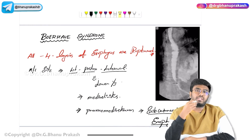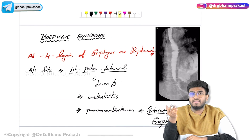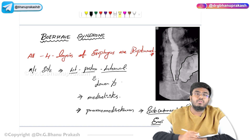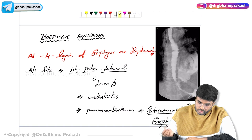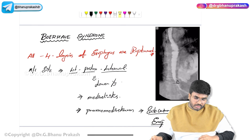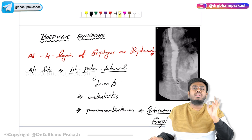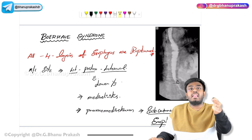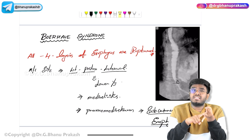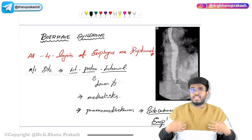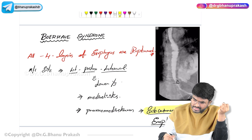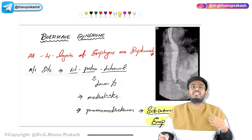This is a more dangerous condition. Barium swallow is actually contraindicated here, but if performed, you can see barium leaking into the mediastinum through the hole. Important points about Boerhaave syndrome: all four layers are ruptured; the most common site is the left posterolateral lower one-third of the esophagus; complications include pneumomediastinum, mediastinitis, and subcutaneous emphysema — air pockets below the skin causing crackling sounds upon palpation.